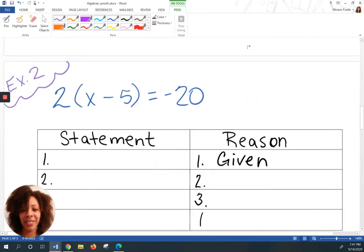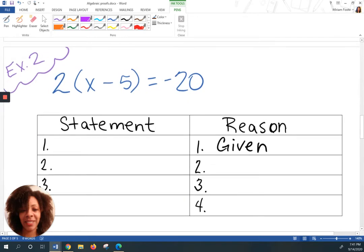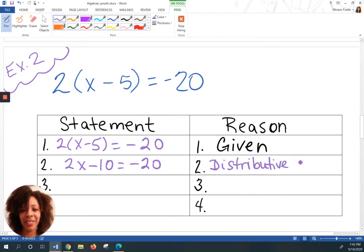My next example, I have parentheses. So the first thing I'm going to do is I'm going to write down my statement. And then the second thing I'm going to do, I know when I have a set of parentheses, that means I'm going to distribute. So I have 2 times X, 2 times negative 5, which is negative 10, equals negative 20. What did I do? I used the distributive property. Remember, that wasn't in my chart, but I added it because I know from time to time you do have to use this distributive property.